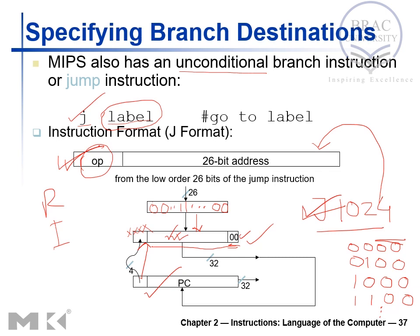If you observe carefully, for branch address calculation we used an arithmetic operation — an adder or ALU — to find the target address. But for J-type instructions, no arithmetic operation or ALU is used. Instead, the process of taking the MSB 4 bits from the program counter and attaching them to the 28 bits is called the concatenation method. We simply concatenate the MSB 4 bits of the program counter with the 28-bit value to produce the 32-bit address.